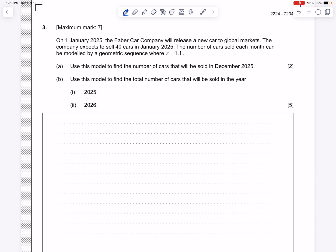This is a geometric sequence question. And the way we know that this is a geometric sequence question is that they're telling us it's a geometric sequence where R is 1.1. So very telling there. All right, so in this question, January 2025, the company releases a new car and they tell us what R is and they ask us, they want to find out how many cars will be sold in 2025.